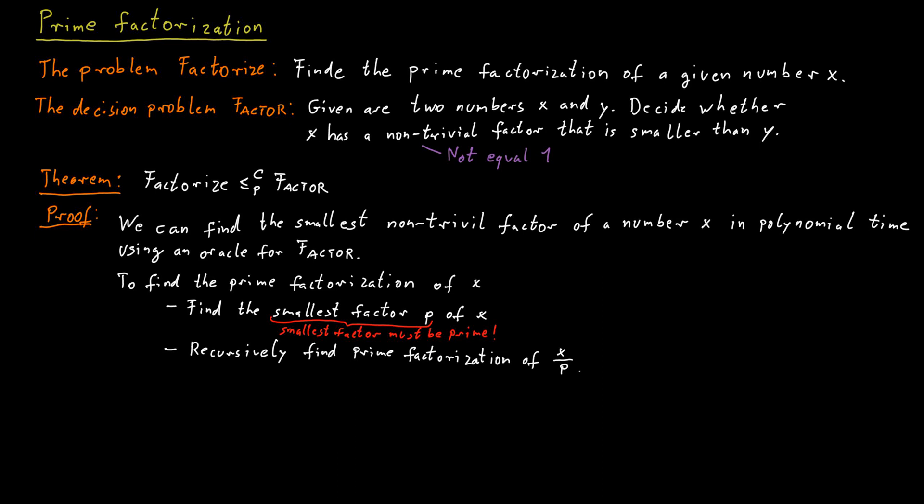What is the running time for this? We said we can find the smallest factor in polynomial time if we have access to an oracle for factor. And also, we don't have to find too many smallest factors. This is because the smallest non-trivial factor of a number is always at least two. So each time we find the smallest factor and then divide our number by that factor, the number will at least half.